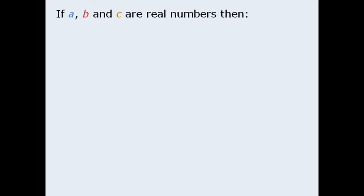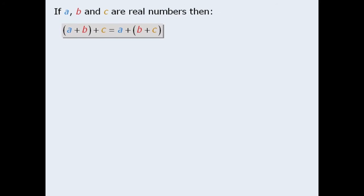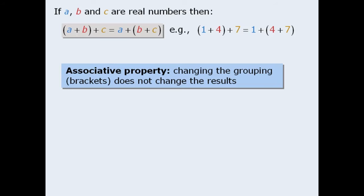The next property says that the sum of a and b plus c is the same as a plus the sum of b and c. For example, if we want to find the sum of 1, 4 and 7, finding the sum of 1 and 4 first and then adding 7 produces the same results as adding 1 to the sum of 4 and 7. The property demonstrated here is called the associative property and we say that an operation is associative if changing the grouping or brackets does not change the results.